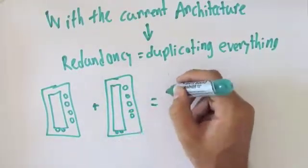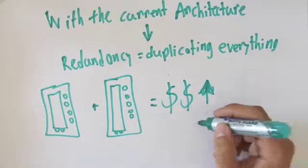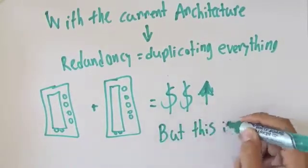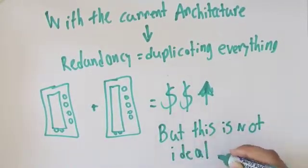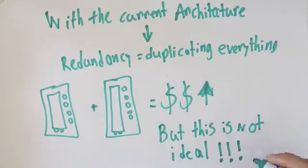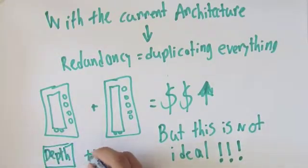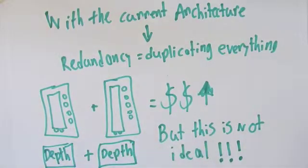A typical example would be duplicating the services found on board a boat by having two multifunctional displays instead of one. This would increase redundancy for sure, but it also increases costs and there is no guarantee that both devices won't fail at the exact same time as they are based on the same hardware and the same software components.